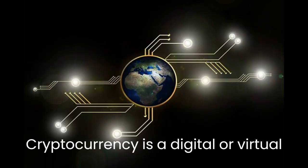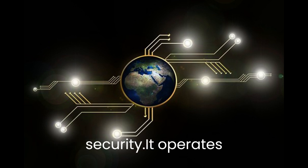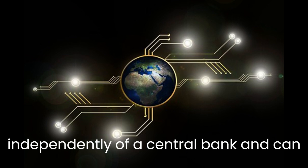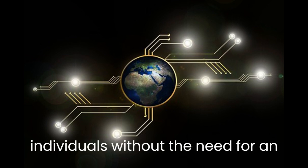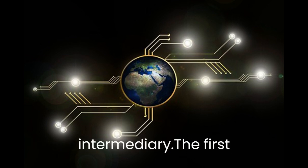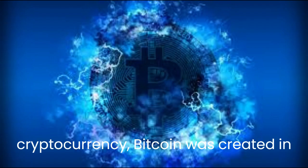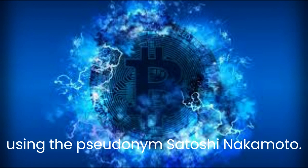Cryptocurrency is a digital or virtual currency that uses cryptography for security. It operates independently of a central bank and can be transferred directly between individuals without the need for an intermediary. The first cryptocurrency, Bitcoin, was created in 2009 by an unknown person or group using the pseudonym Satoshi Nakamoto.